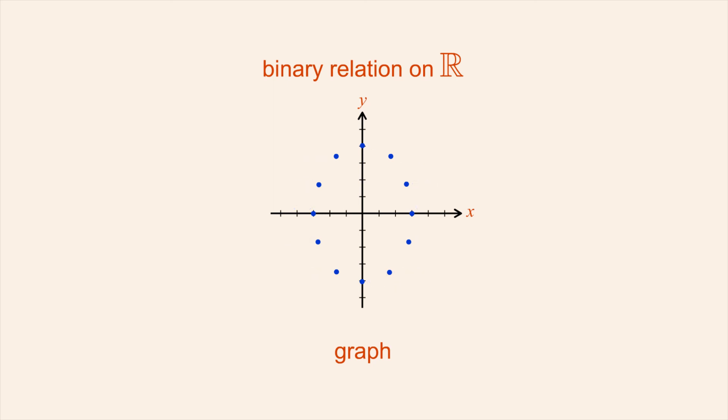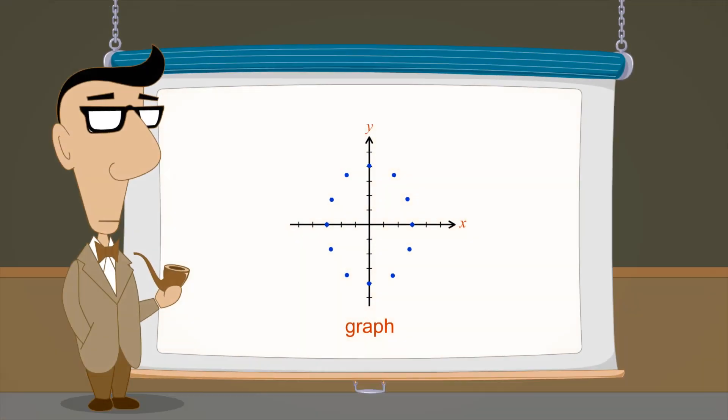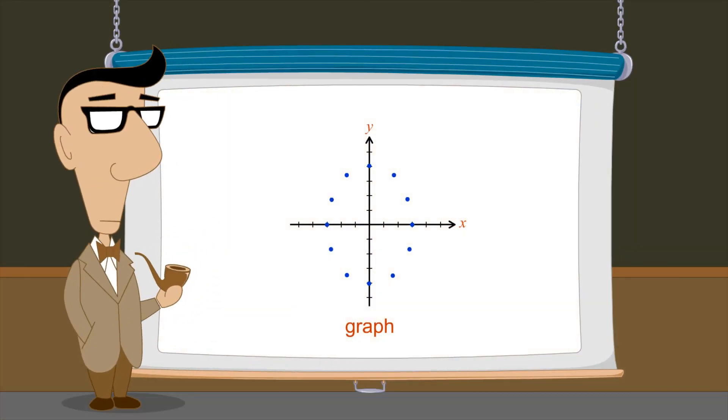Creating this visual representation of a relation is called graphing the relation and is one of the most powerful methods for understanding mathematical relations. There are many types of graphs. Graphs of finite sets of ordered pairs like this are called scatter plots.